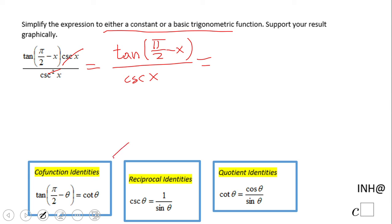First of all, we look here and see co-function identity: tangent of π/2 minus theta is cotangent of theta. In this case here I'm going to have cotangent of x.